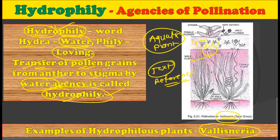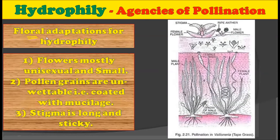So hydrophily is nothing but the transfer of pollen grains from anther to the stigma by using water as an agency. Let us consider what are the floral adaptations acquired by the plants to use hydrophily. We have seen the floral adaptations relating with anemophily; now in this video we will see the floral adaptations for the hydrophily.